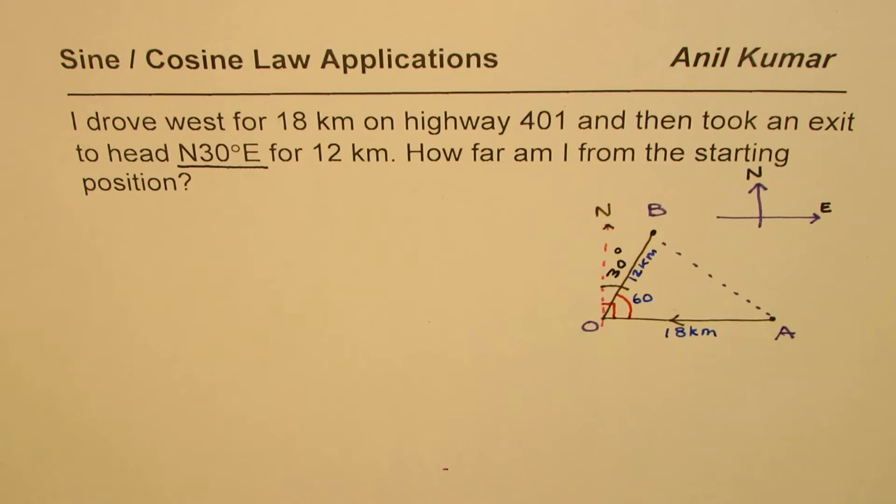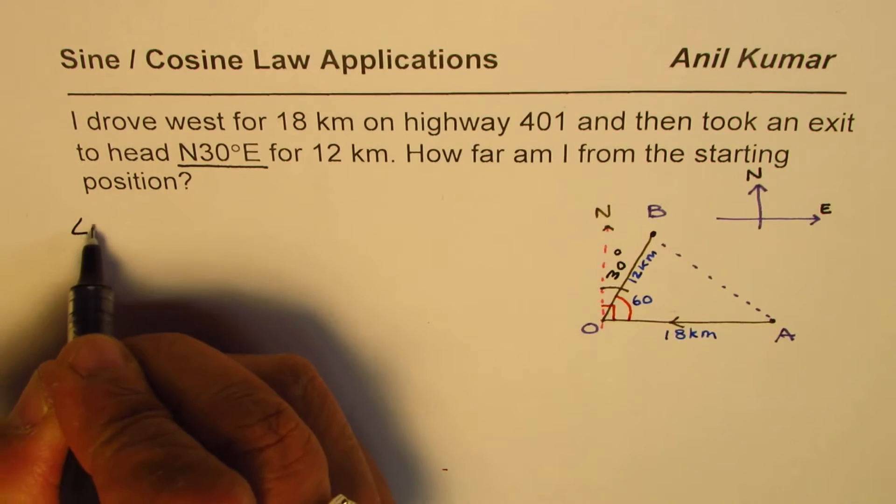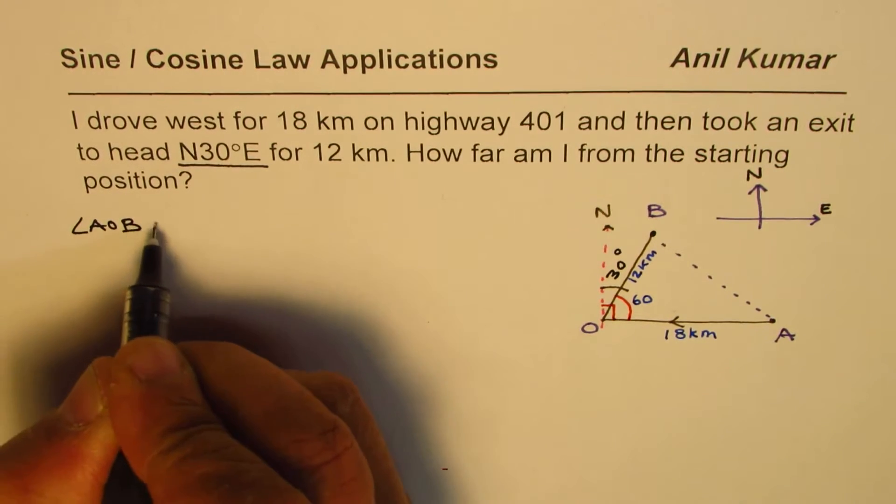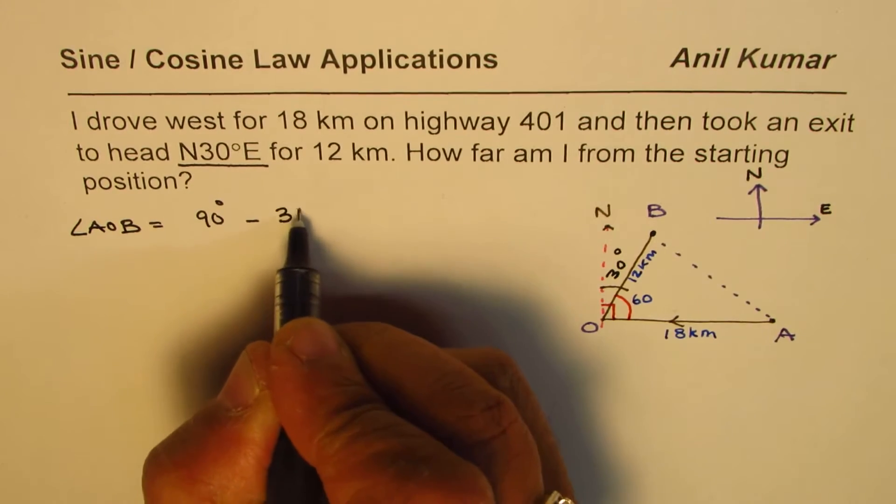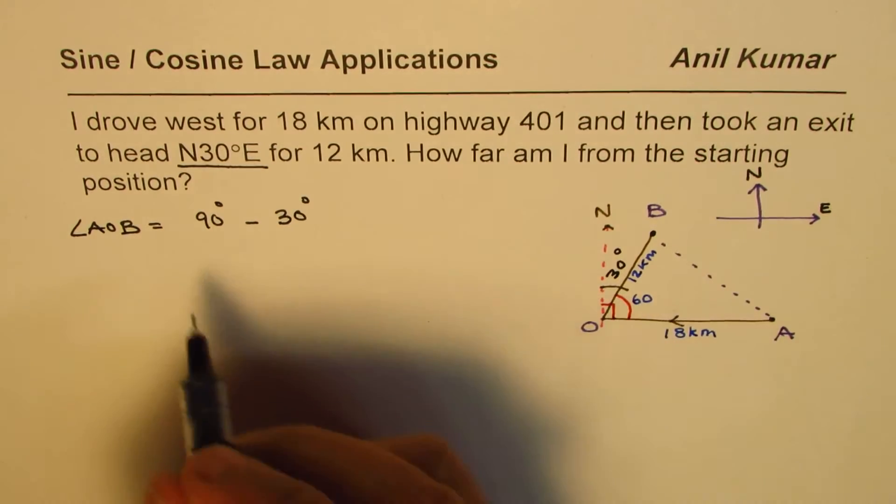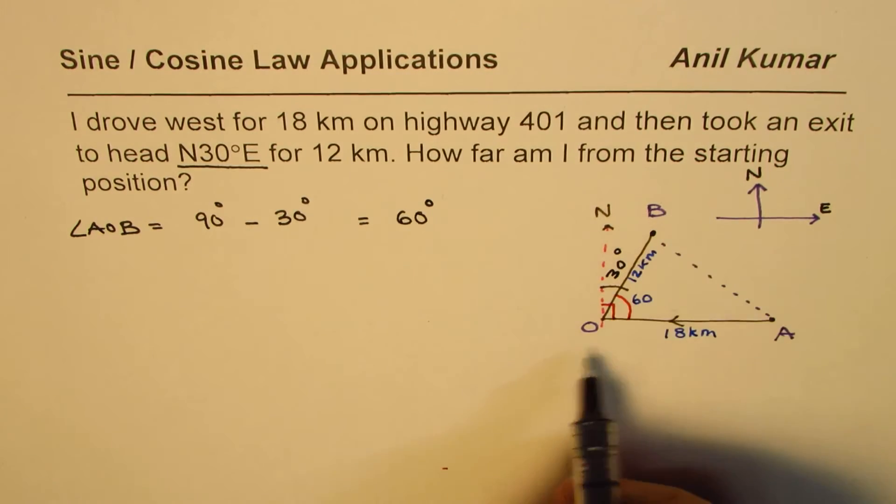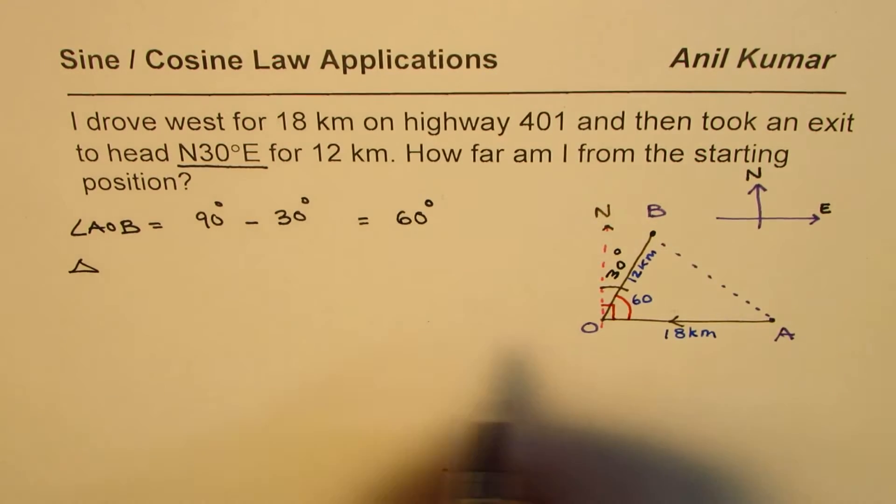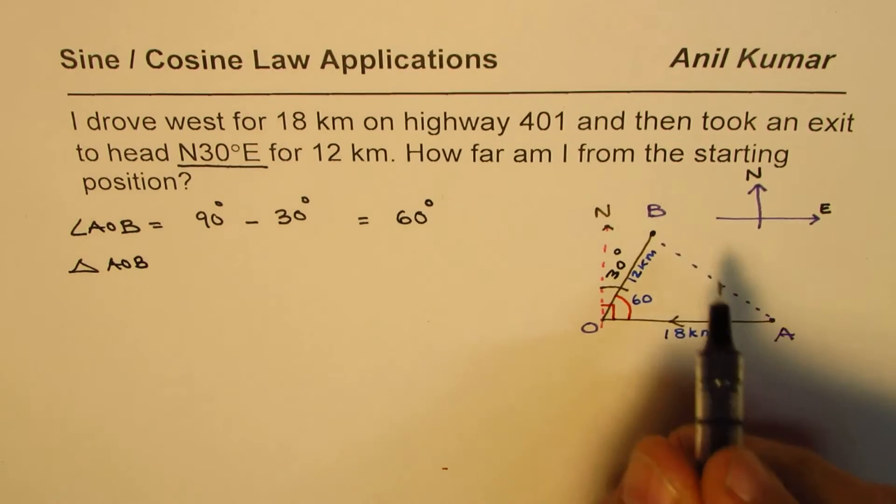The angle AOB should be equal to 90 minus 30 which gives me 60 degrees. So the first step for us is to find the angle within the triangle AOB. Angle AOB equals 90 degrees take away 30 degrees, so that is 60 degrees.